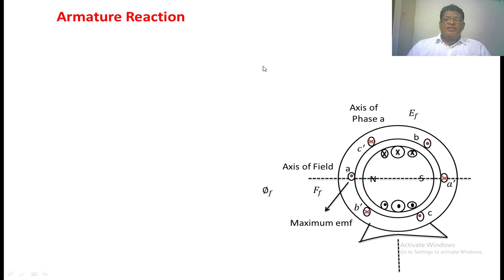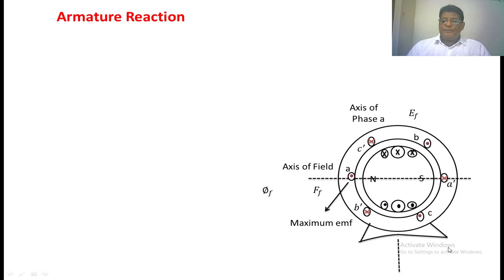Now we are going to see the armature reaction in a synchronous generator. This is the stator in which 3-phase winding is distributed, displaced by 120 degrees per phase. This is the A phase — this is the starting terminal and this is the finishing terminal. This is the B phase starting and finishing terminal, and this is the C phase starting and finishing terminal.